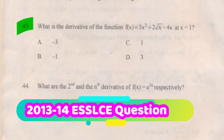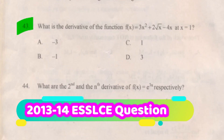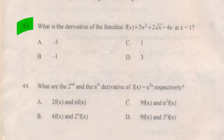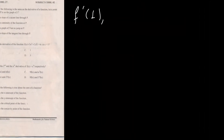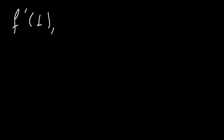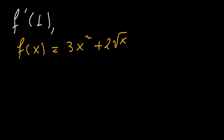What is the derivative of the function f of x equals 3x squared plus 2 times square root of x minus 4x at x equal to 1? We have to find f derivative at 1. So the function is given by f of x equals 3 times x squared plus 2 times square root of x minus 4 times x.